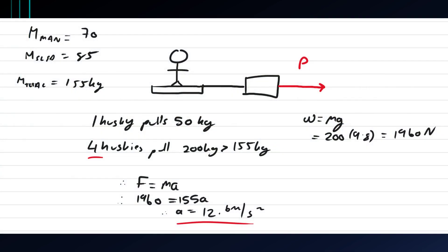So here is our model solution. Up here we have all of our information. The mass of the man is 70, the mass of the sled is 85.